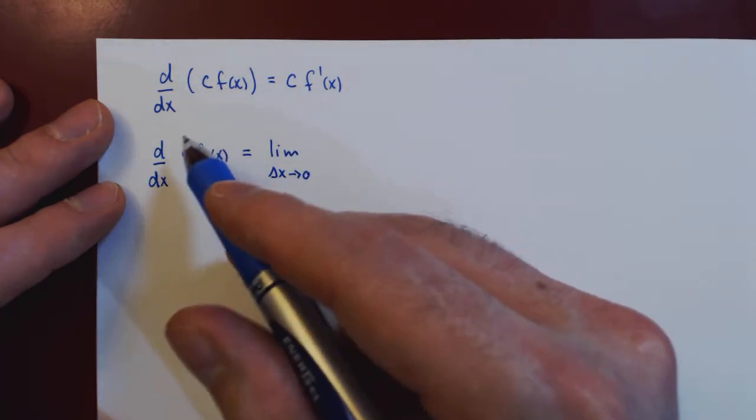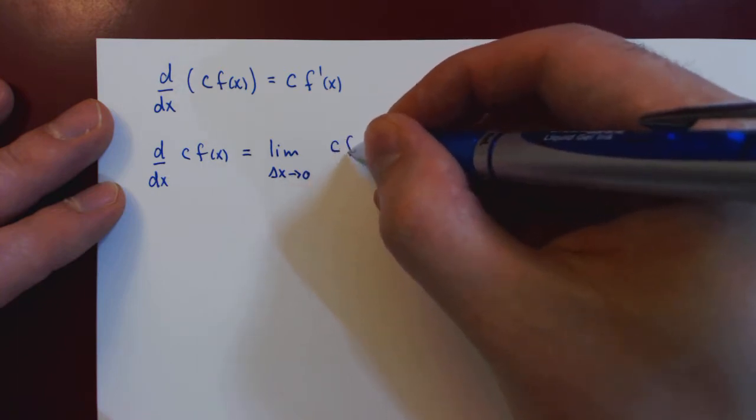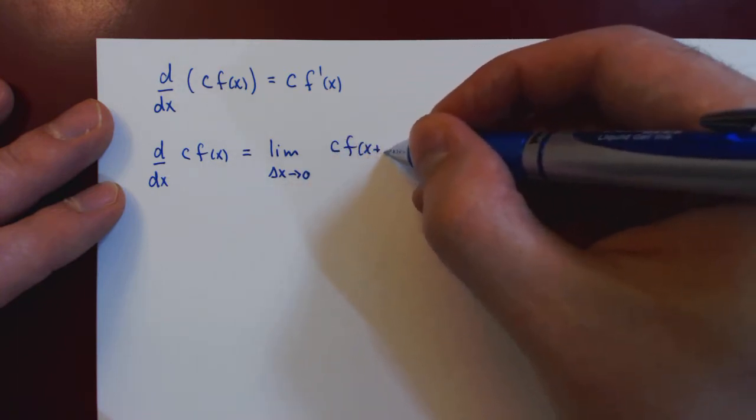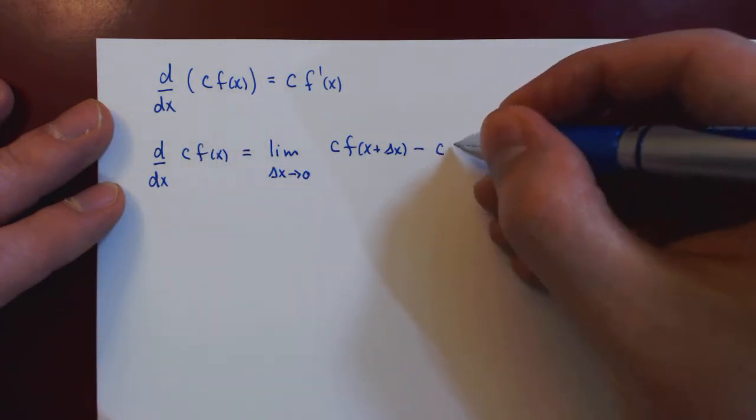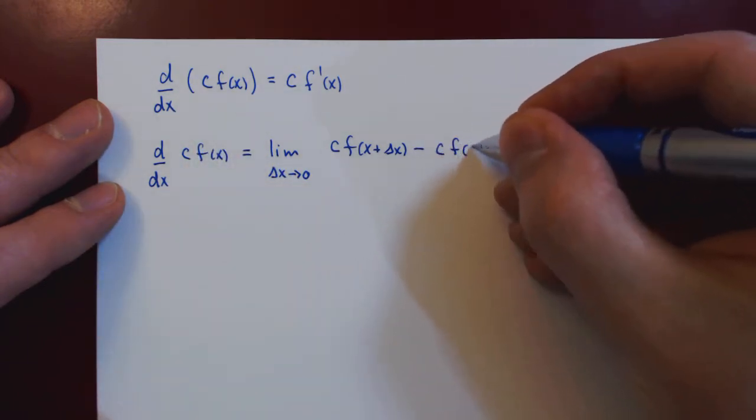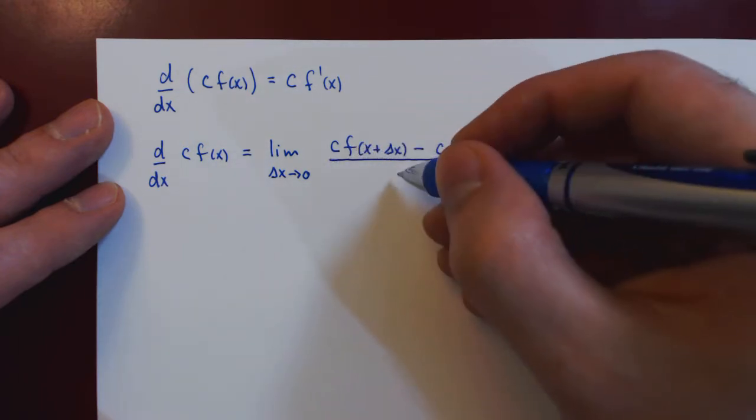So we find the function at x plus delta x, so c times replacing x by x plus delta x, minus the function at x, c times f of x, and we of course divide by delta x.